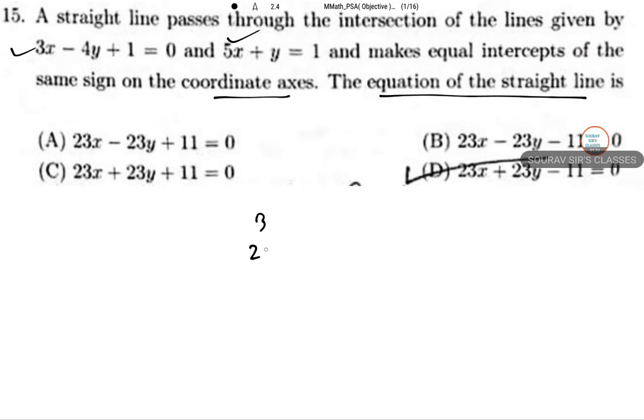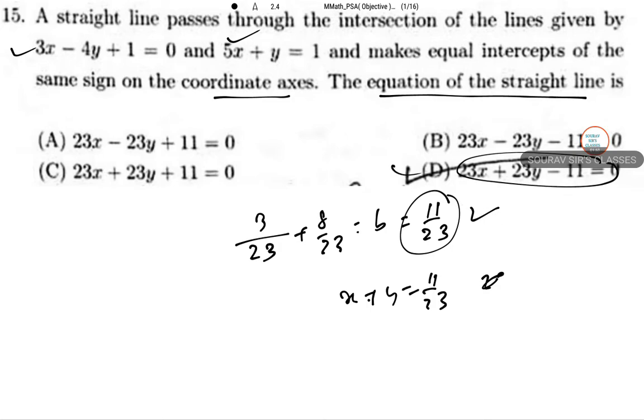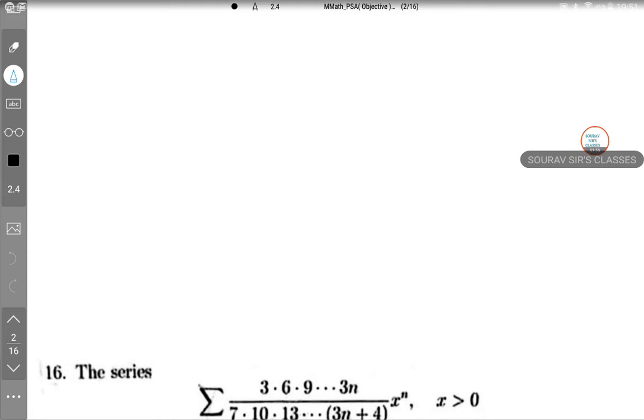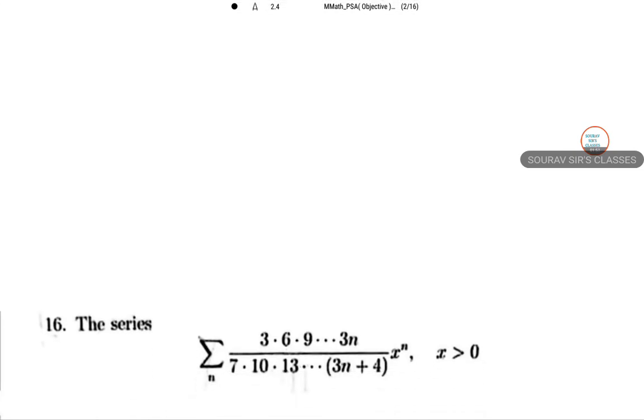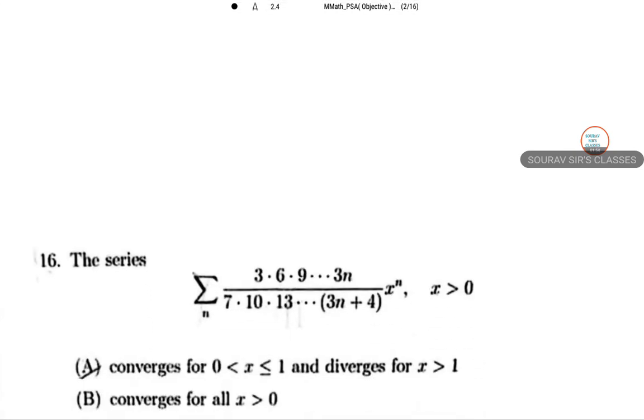Just put these values: 3 by 23 plus 8 by 23 equals b, so b equals 11 by 23. Once we get it, the equation of the line is x plus y equals 11 by 23. So the final answer is 23x plus 23y equals 11. This is option D. Let's go to the next one.